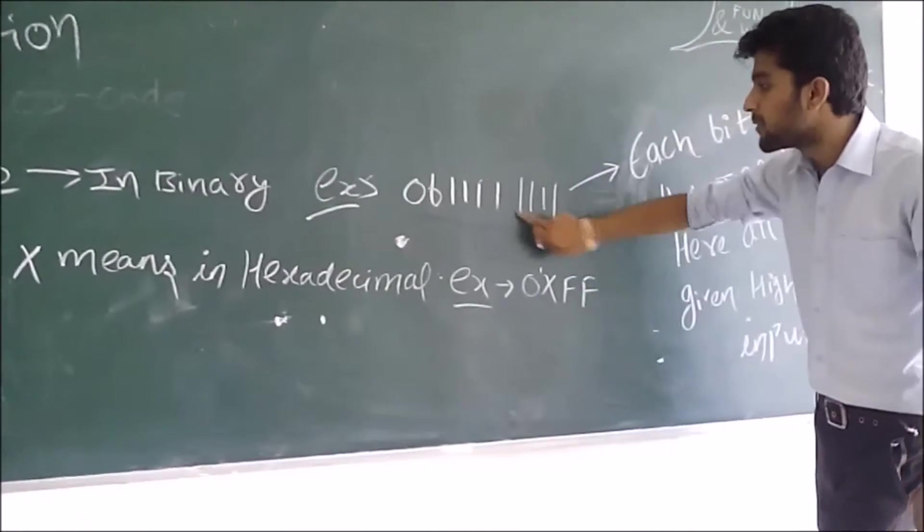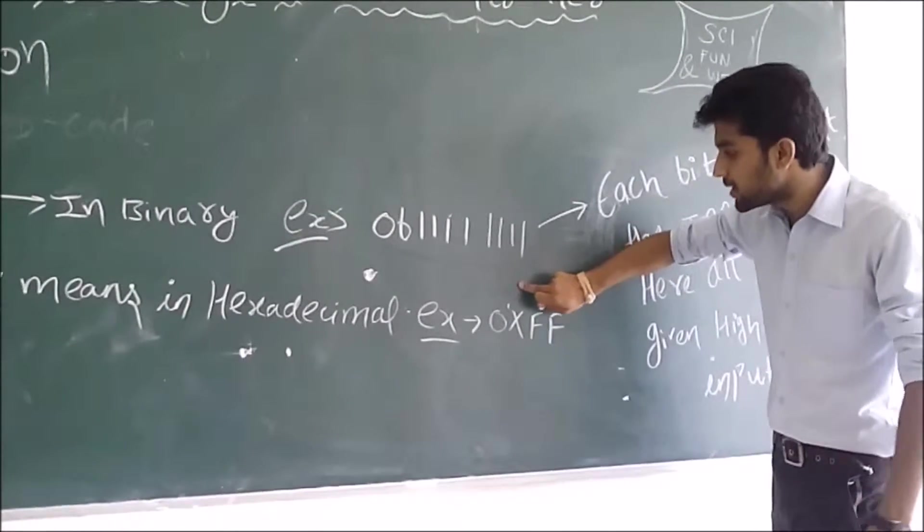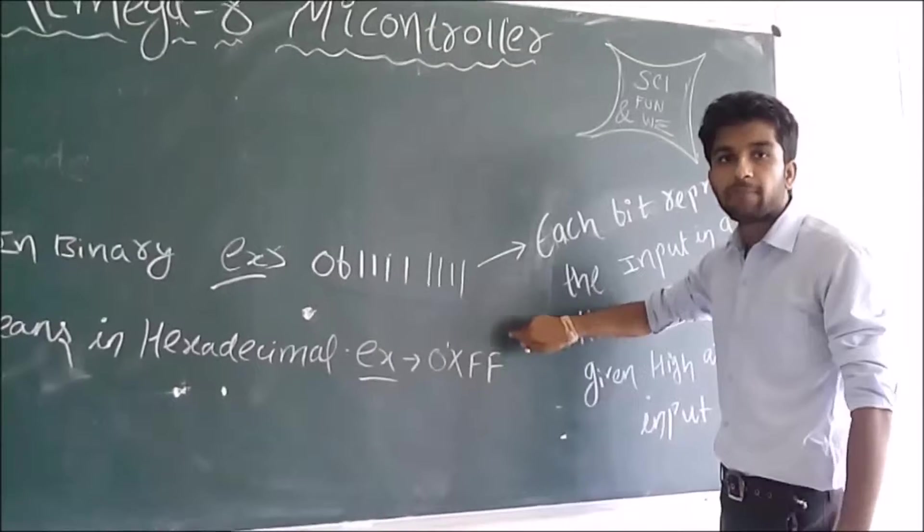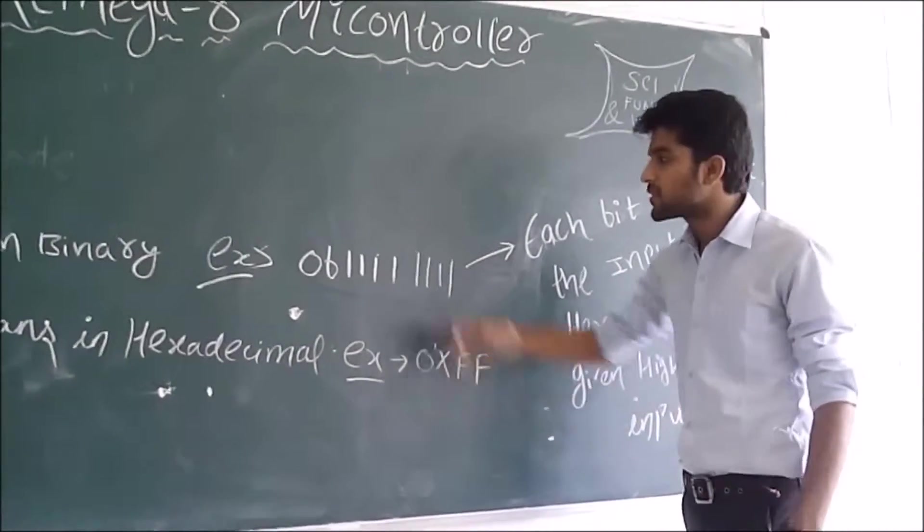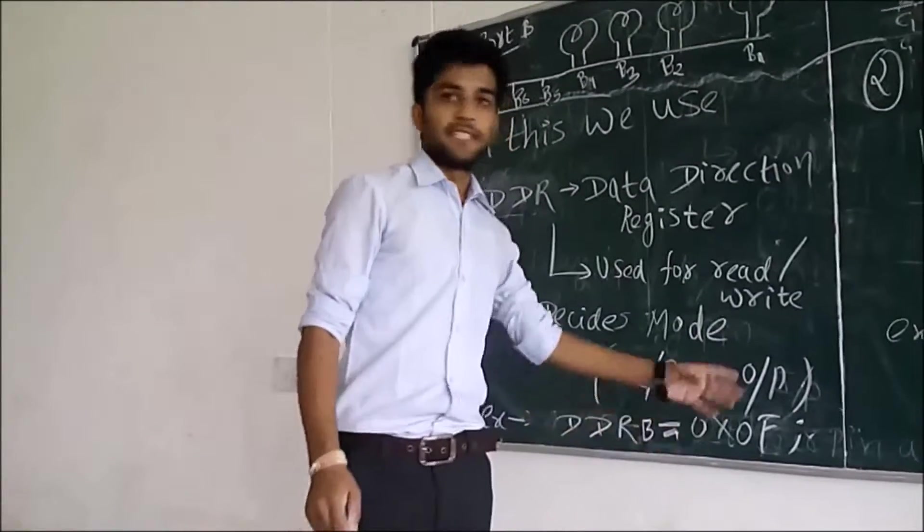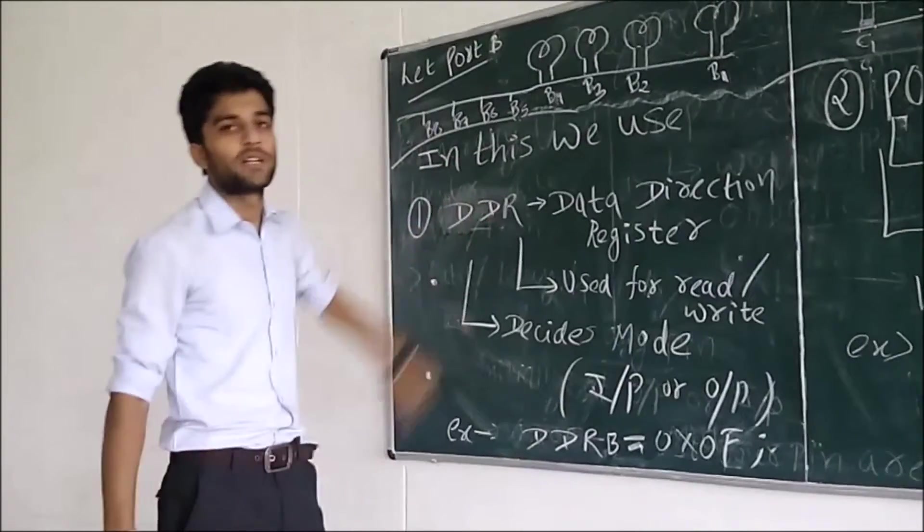So, according to it, how can it be represented in hexadecimal? It can be represented as 0xFF. F means 15, which is 1111 in binary. So, we have seen the representation. Now, let us come to the main topic.